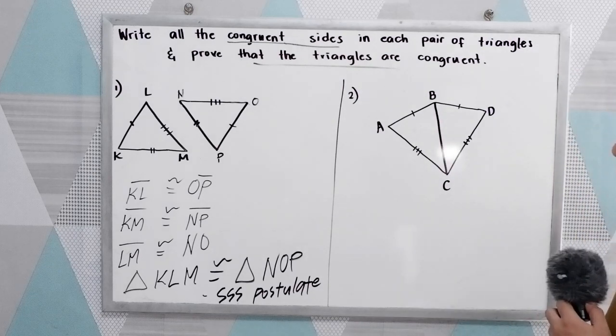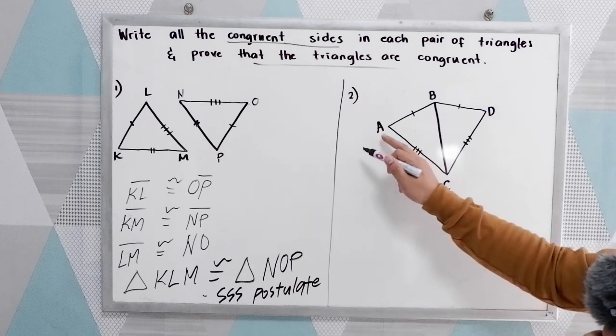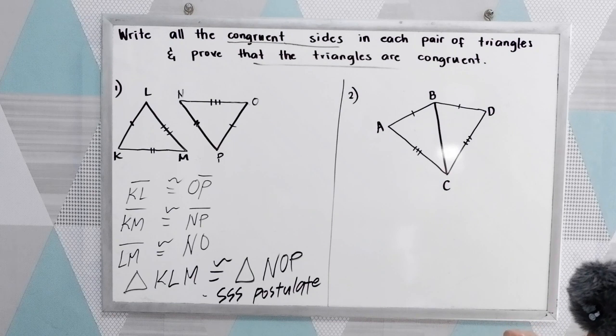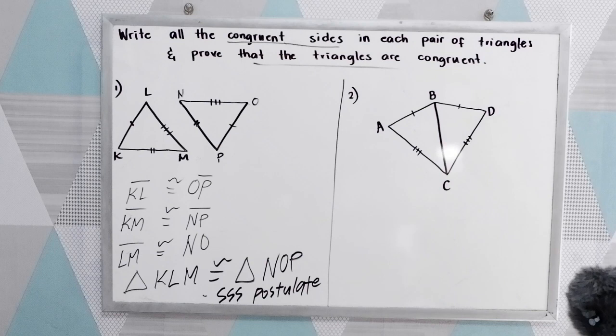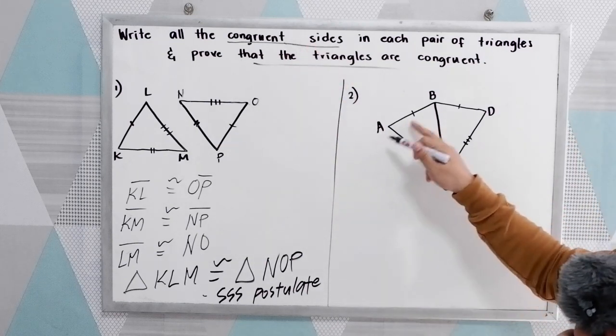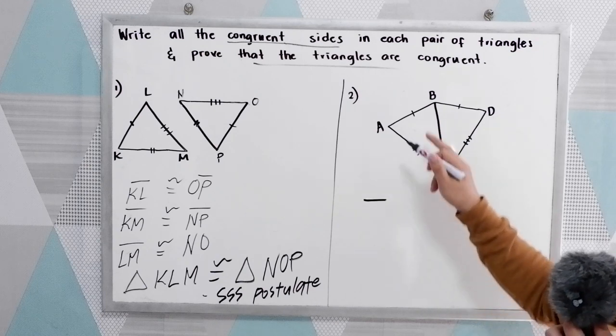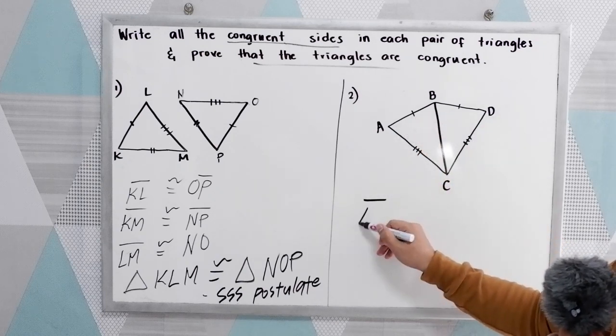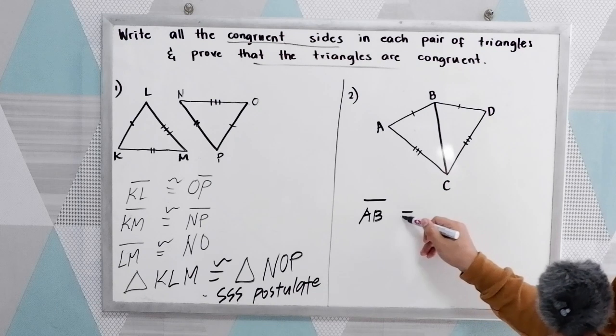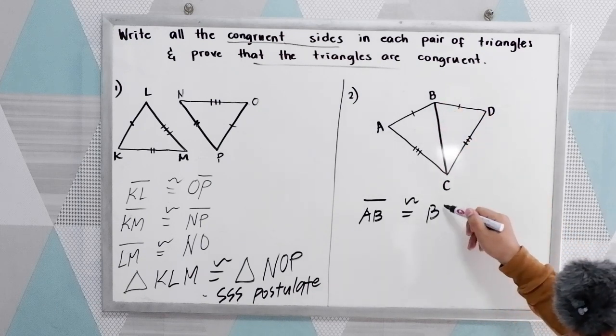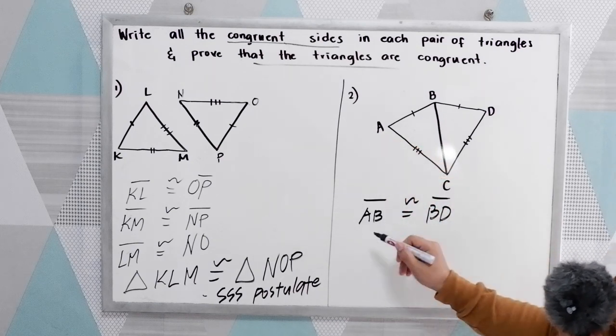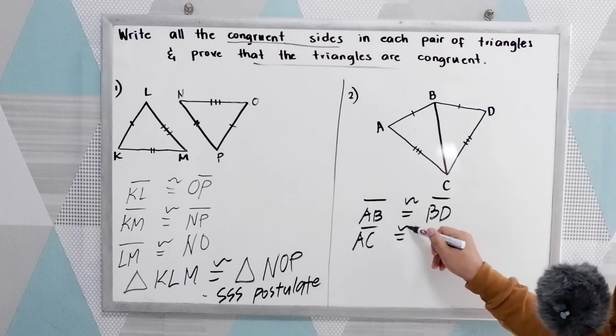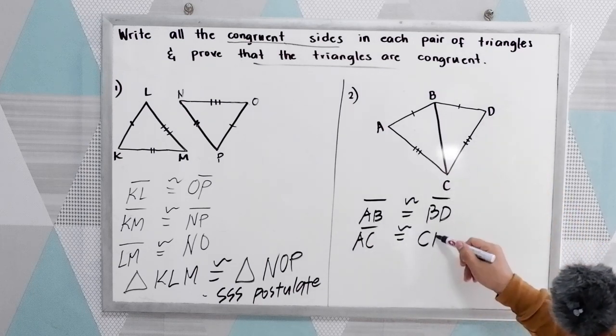Now, for number 2, we have here two triangles. Triangle ABC and triangle BCD. Write all the congruent sides. Let's start with our first. First side is AB is congruent to BD. Second, our given AC is congruent to CD.